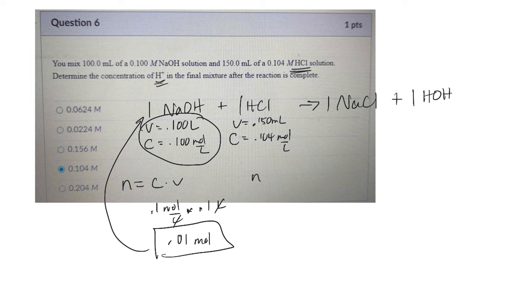I could do the same thing for this next one. C times V. So 0.104 moles per liter times the volume of 0.150 liters. Let me figure it out.